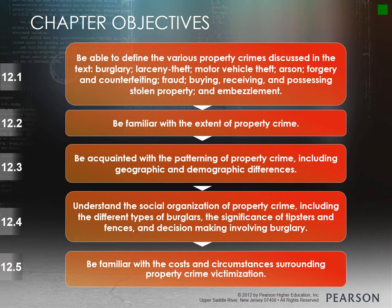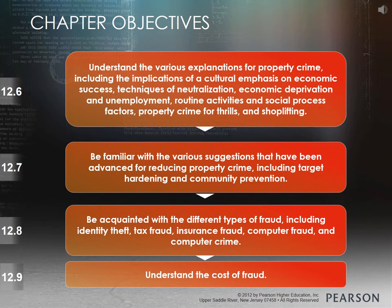Chapter 12 objectives: we want to define the various property crimes discussed in the text, including burglary, larceny theft, motor vehicle theft, arson, forgery, counterfeiting, and fraud — which may include buying, receiving, and possessing stolen property or embezzlement. We want to become familiar with the extent of property crime and be acquainted with patterning including geographic and demographic differences.